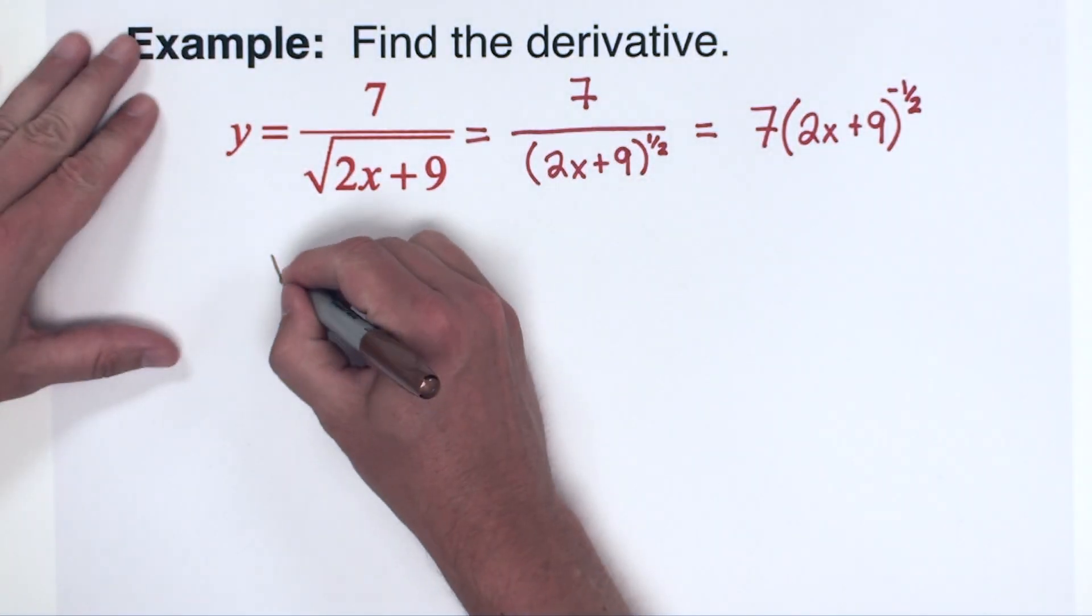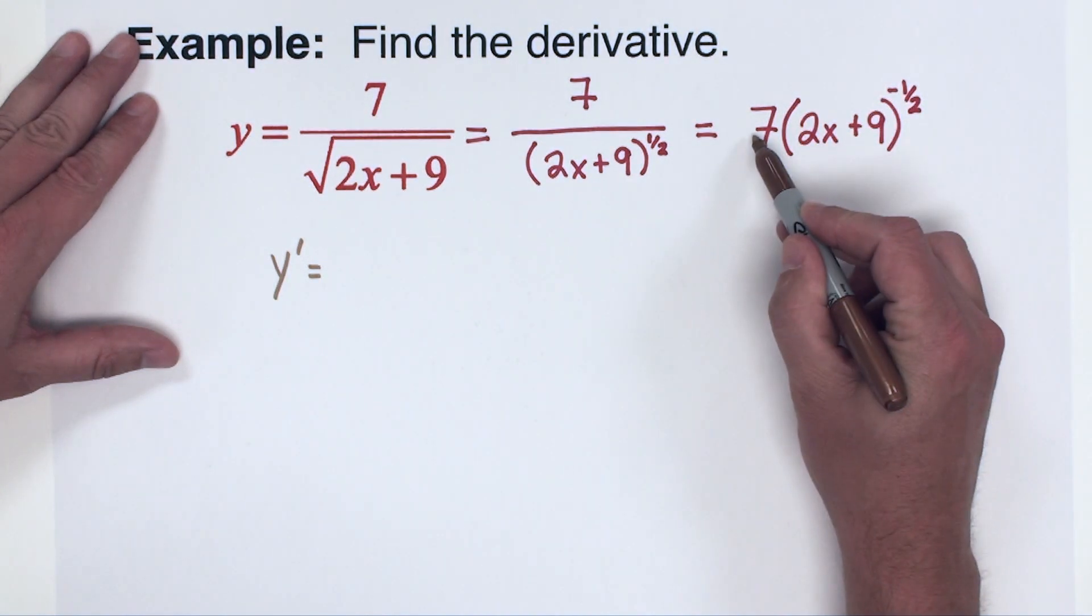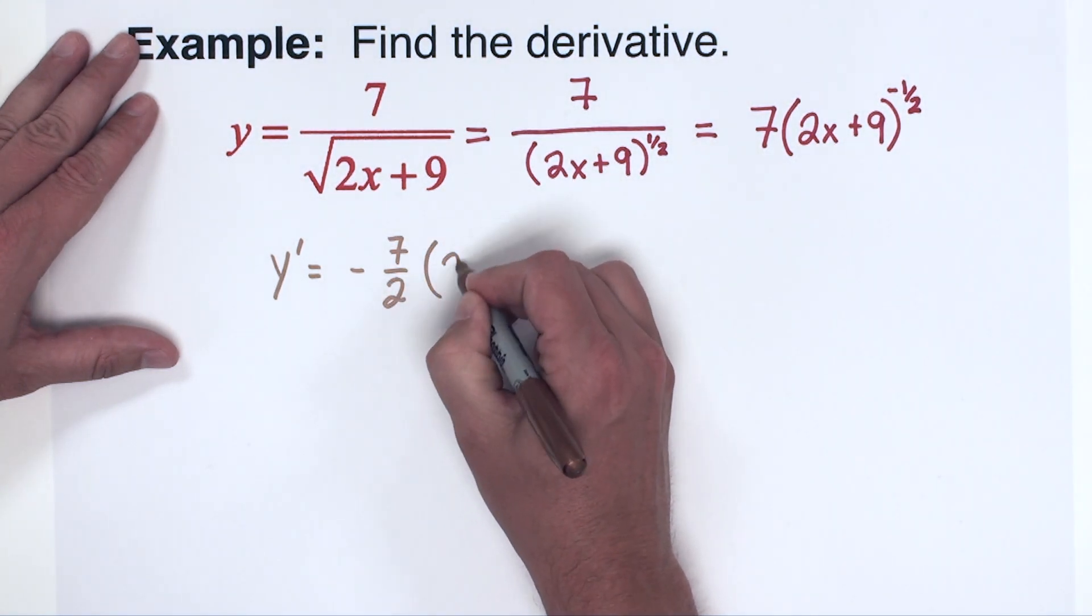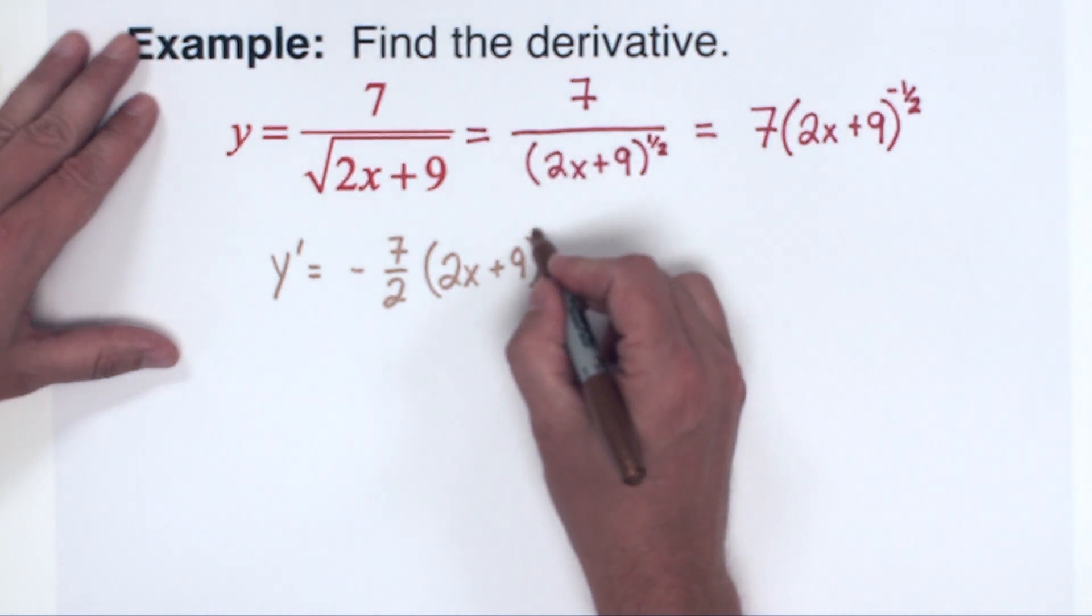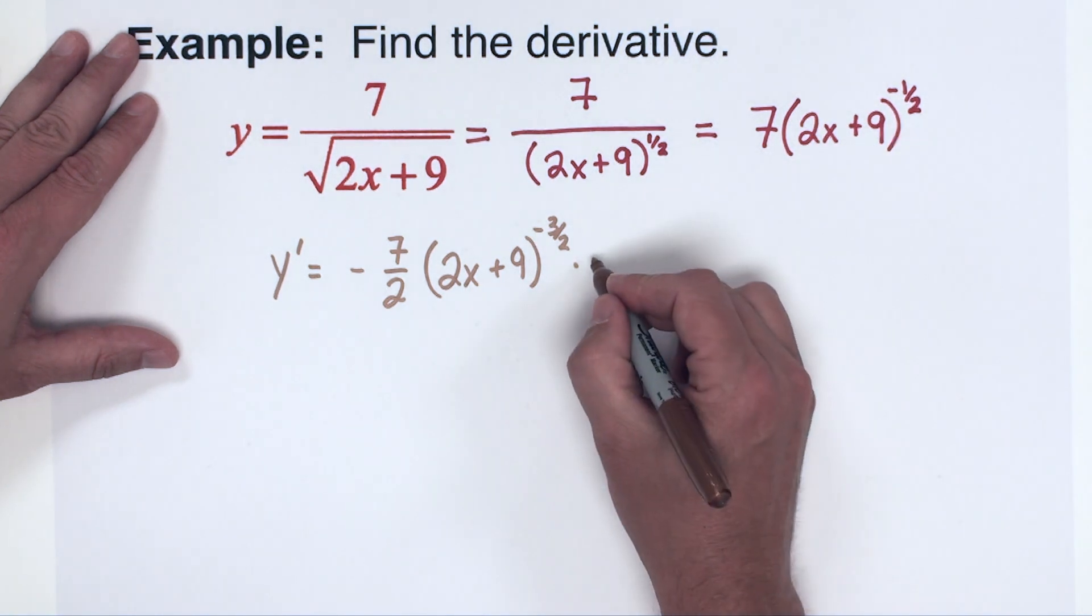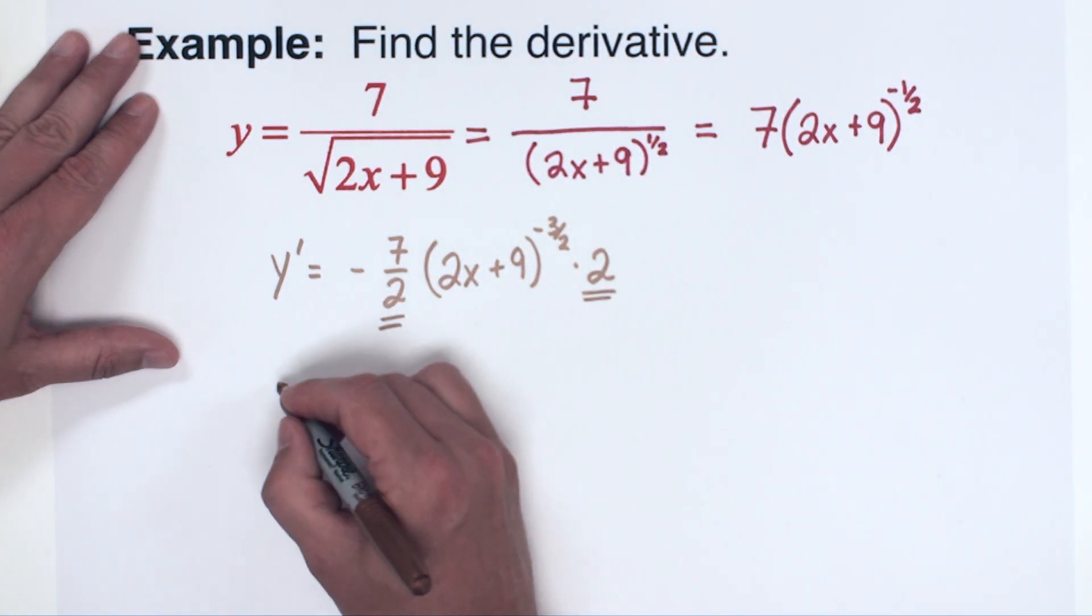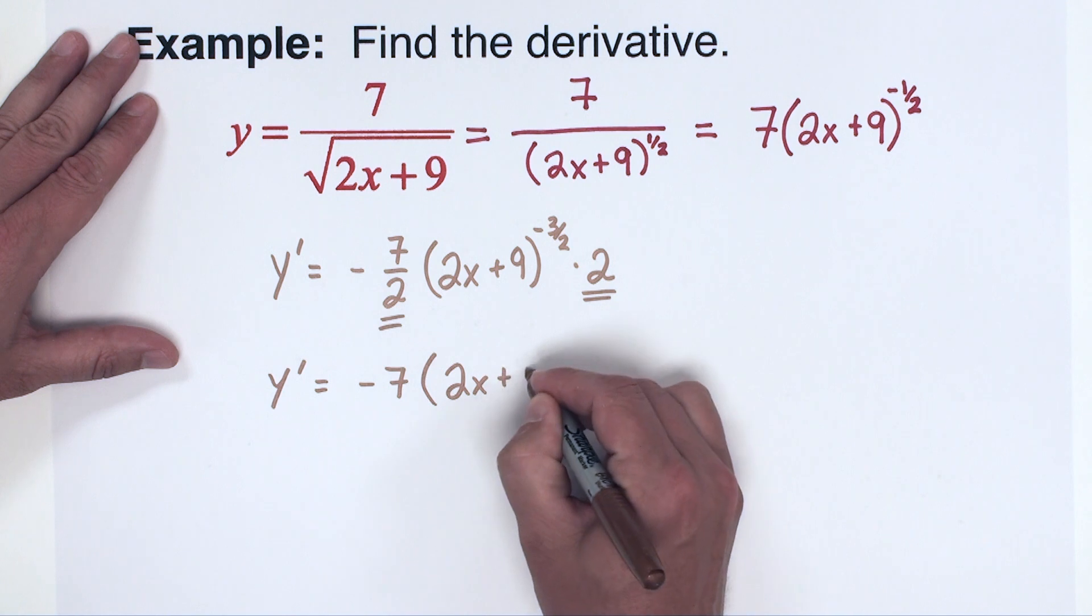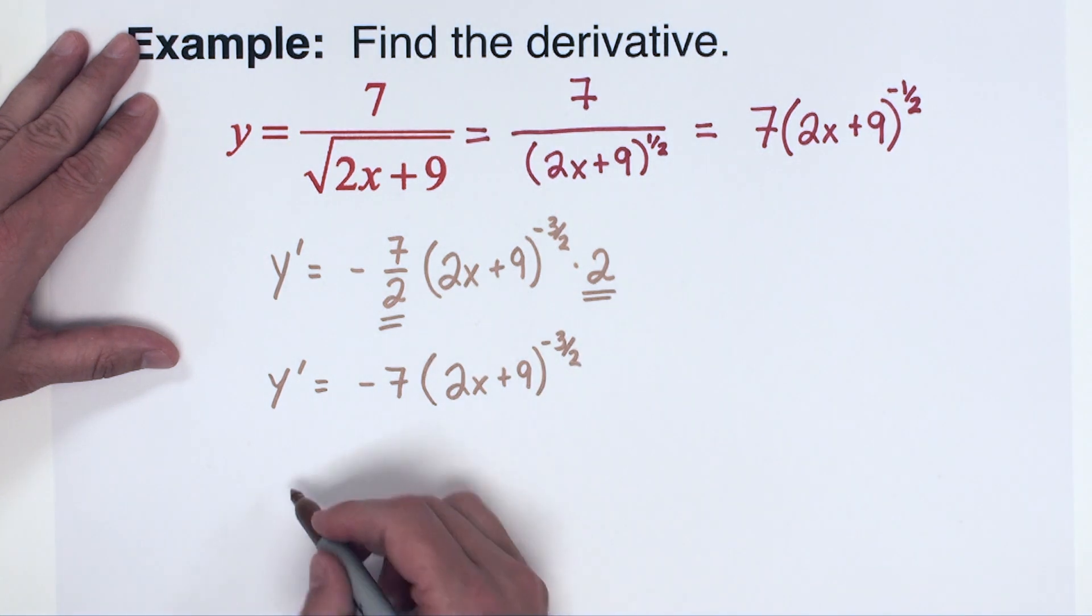Okay, here we go. Let's take the derivative of this form of our function. So the power comes out in front, it multiplies to the 7. So we have negative 7 halves. The inside stays as it is. And when we subtract 1 from this power it gets us to negative 3 halves. Now we're going to multiply that by the derivative of the inside. So 2x plus 9's derivative is 2. I am going to go ahead and multiply these together. So that's going to give me y prime equals negative 7 times the quantity 2x plus 9 to the negative 3 halves power. I am going to finish this by just fixing the negative power.